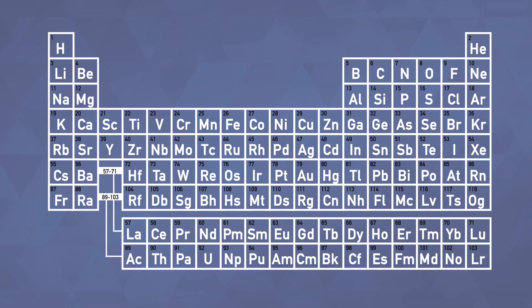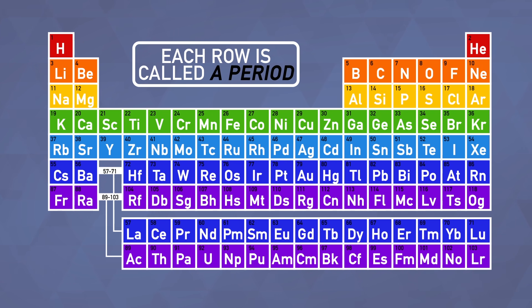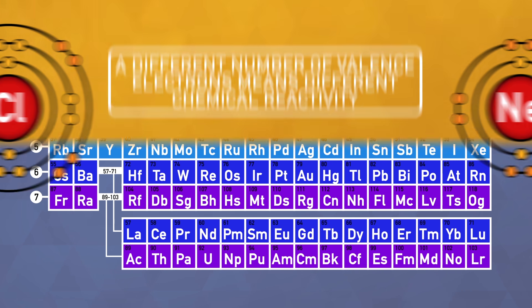Now let's take a look at the rows. Each row is called a period, and like the groups, each row is given a number, this time 1 through 7. Within each period, the valence electron configurations of the elements change from element to element since there are more electrons. As a result, we see the chemistry of the elements changing as well.